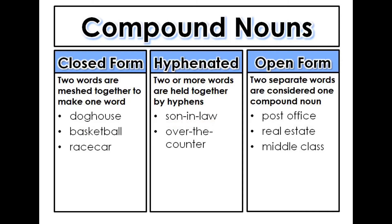Open form: two separate words that are considered one compound noun, like post office, real estate, or middle class. The tricky distinction here is — whereas tall describes a ladder, does post describe an office? But when words are so frequently used together, we just consider them as one noun, even though they're separate words.